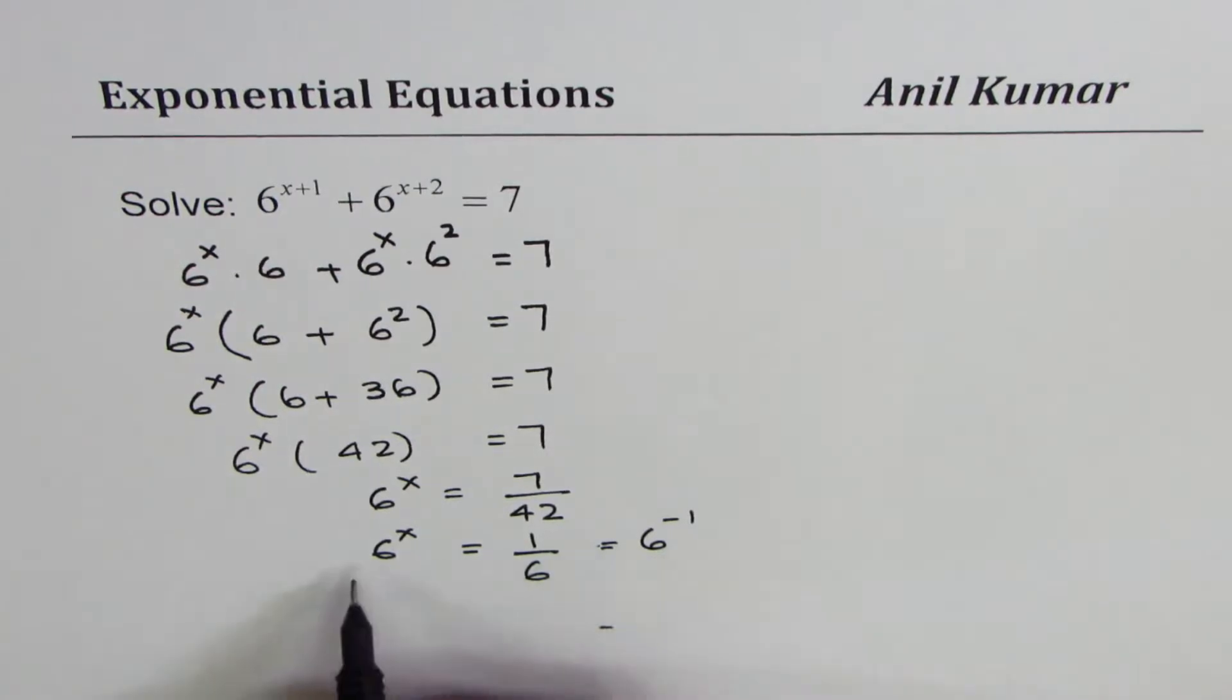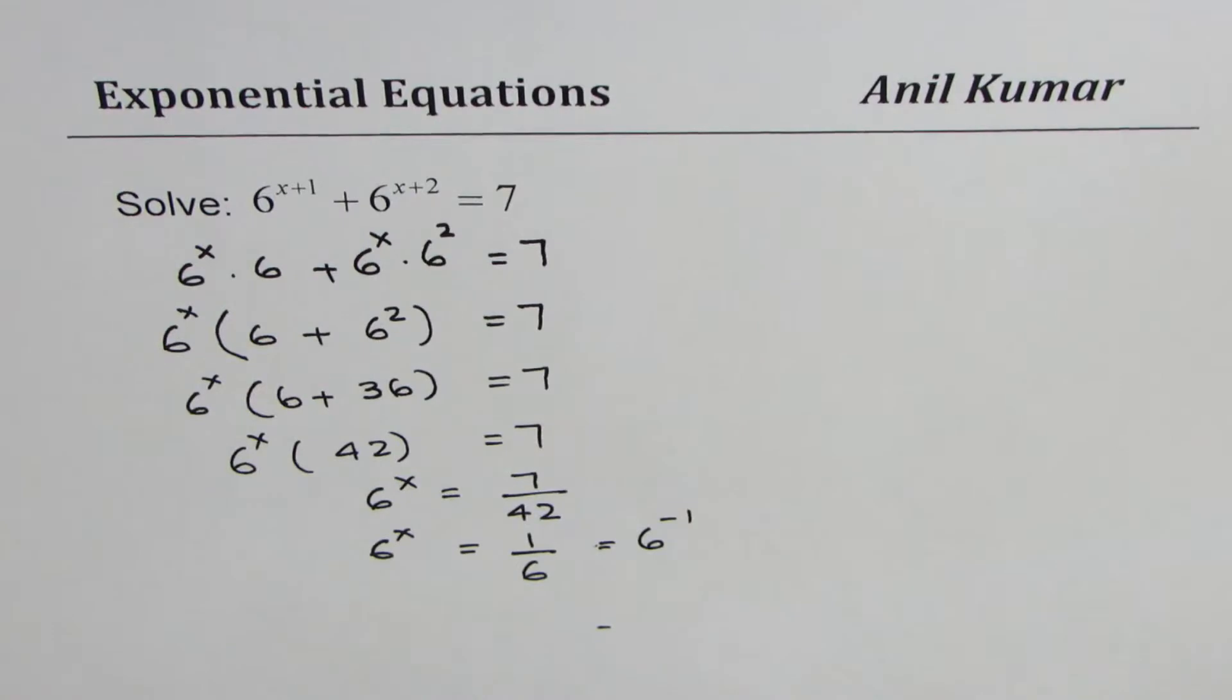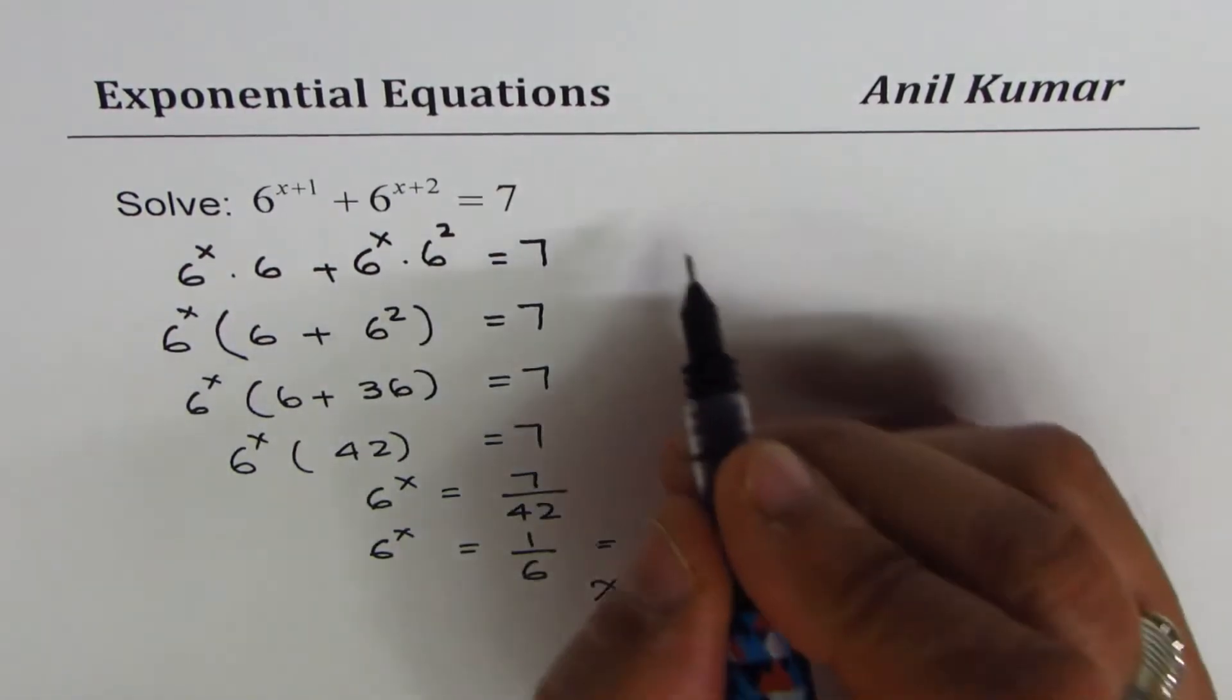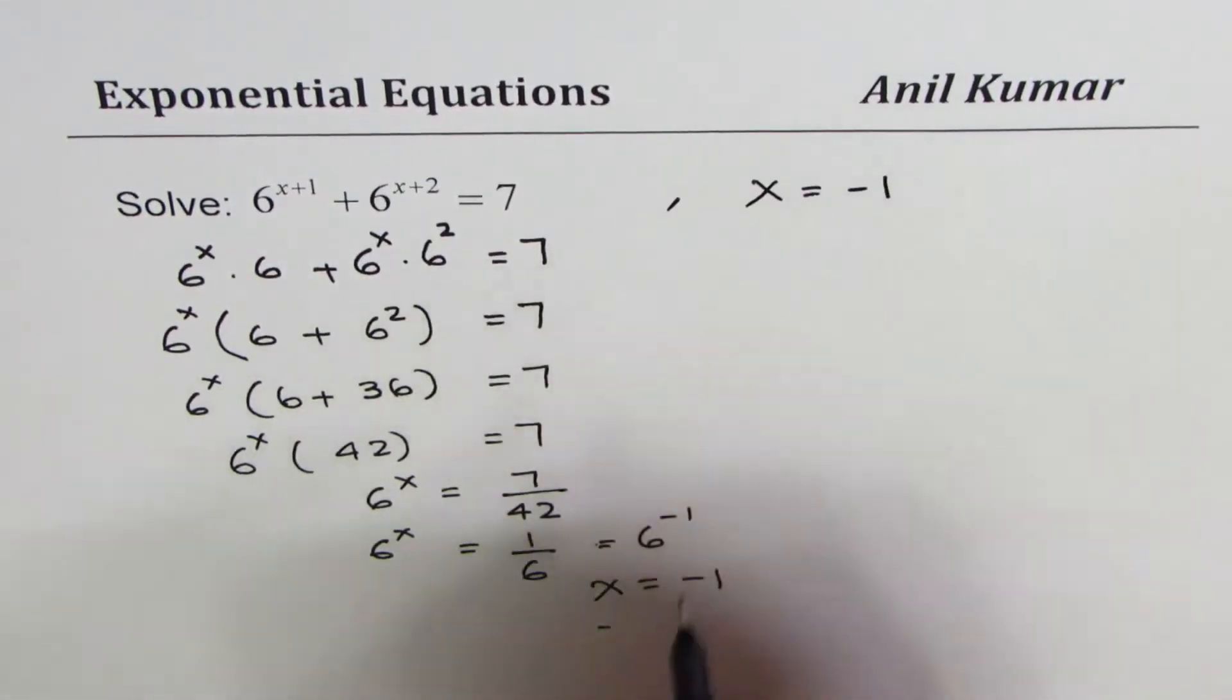When the bases are the same, the exponents must be equal. Therefore, x = -1. The solution is x = -1.